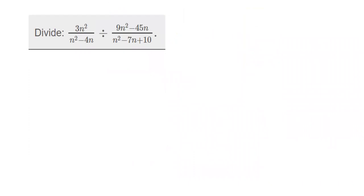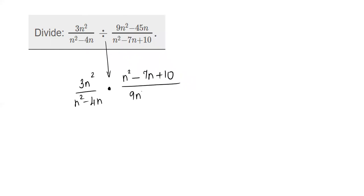Let's tackle the lengthier problem. We have 3n² over (n²−4n) divided by (9n²−45n) over (n²−7n+10). Applying keep-change-flip: keep 3n²/(n²−4n), change to multiplication, and flip to get (n²−7n+10) over (9n²−45n). Now let's plan the factorization for each piece.